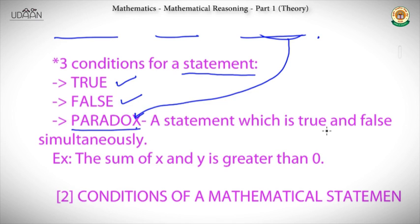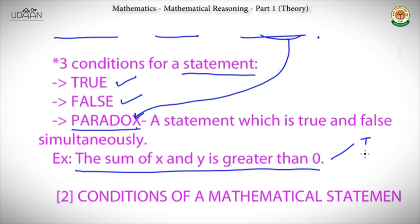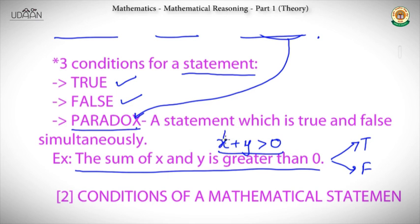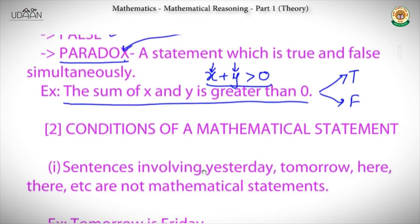For example, take the statement: the sum of x and y is greater than zero. This statement could be true or false depending on the values of x and y. It is true when x and y are both positive, and false when both are less than zero. Since it holds true and false depending on values, that is why we call it a paradox.